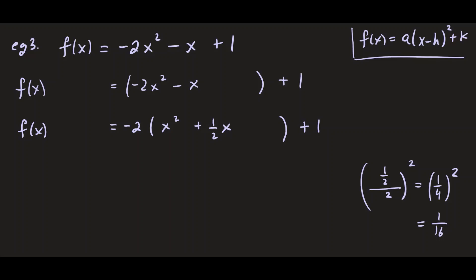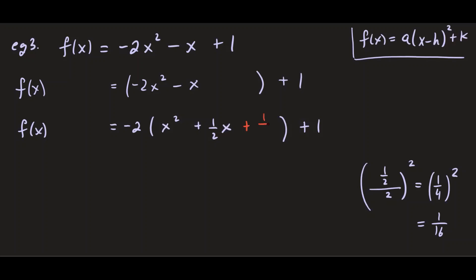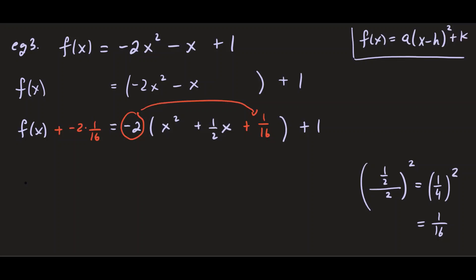Overall we added -2 × (1/16), so we also add -2/16 to the left side to keep the equation balanced. Now we can write the perfect square: f(x) - 2/16 = -2(x + 1/4)² + 1, since b/2 = 1/4.